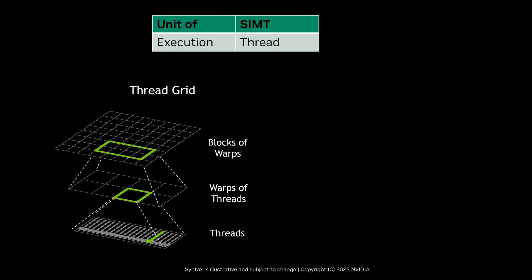In traditional SIMT, the unit of execution is a thread. You write functions that are executed by many threads at once, organized into a hierarchical grid. We call these functions kernels.